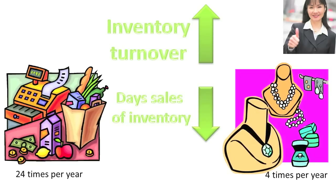Grocery stores turn their inventory over more often but tend to have lower gross margins. Jewelry stores turn their inventory over less often but tend to have higher gross margins.